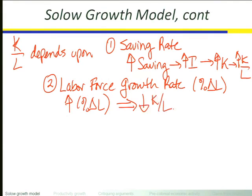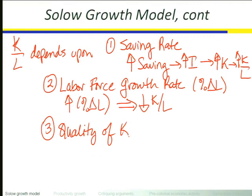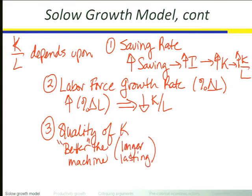The third thing that matters is the quality of capital — we capture that by how long a typical machine lasts: two years, five years, ten years, twenty years. The longer a machine lasts, all else constant, the more machines there will be per worker. We capture that with the depreciation rate — inversely related to how long a machine lasts. A long-lasting machine has a very low depreciation rate; a short-lived machine has a high depreciation rate. So the lower the depreciation rate — that is, the longer the machine lasts — the higher is the capital-labor ratio.